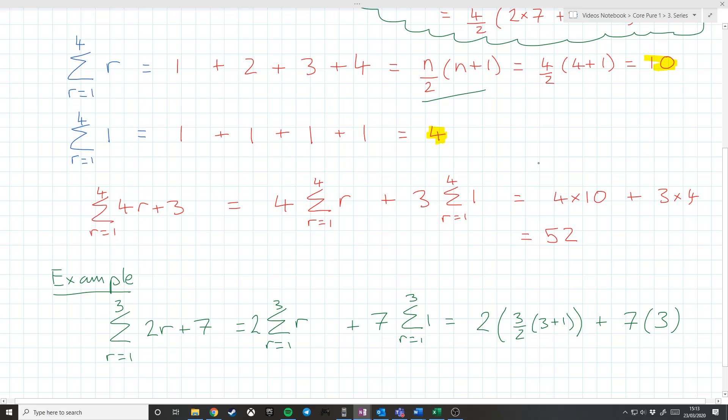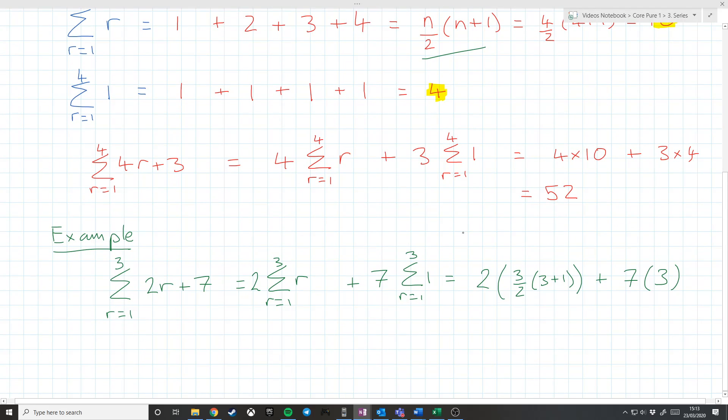So overall, we get 2, open brackets. So I've got 3 times 4, which is over 2, so we get 6 plus 7 times 3, which is 21. So I get 12 plus 21, which equals 33. And that was our sum from there.